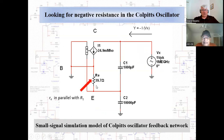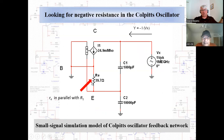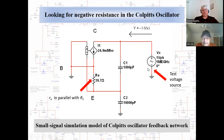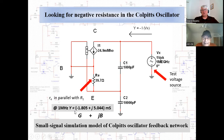Here's the simulation model. R1 from the bias network winds up in parallel with the base-emitter small signal resistance — it went from 39.8 ohms due to the transistor alone to 39.7 ohms when R1 was included, so hardly worth worrying about. I put a test source on the output and looked at the admittance looking into this network at one megahertz. The conductance was −1.805 + j5.044 millisiemens — it's showing a negative conductance right there, with no negative resistance element present.